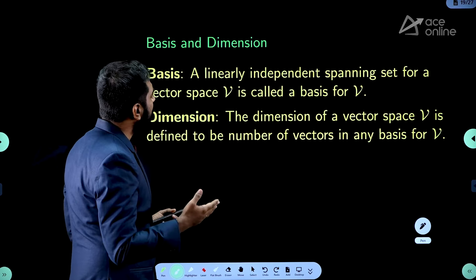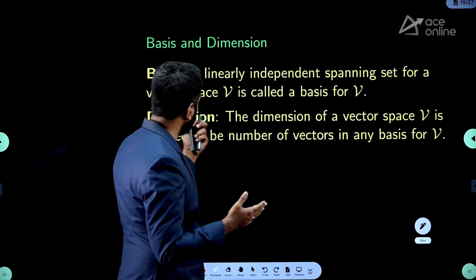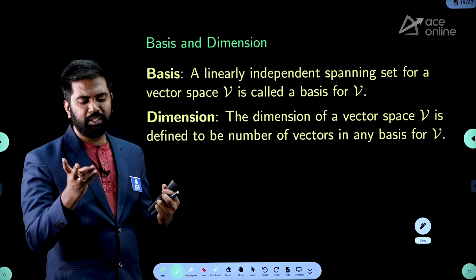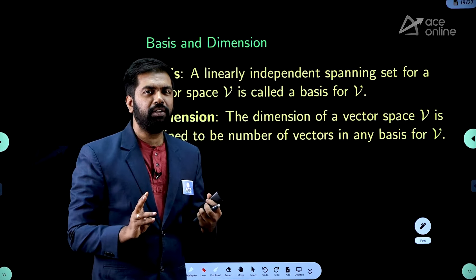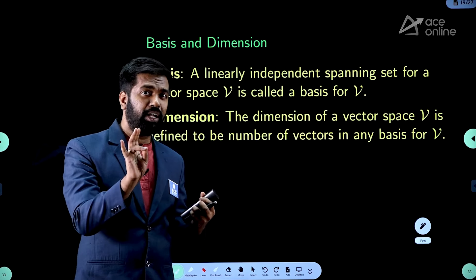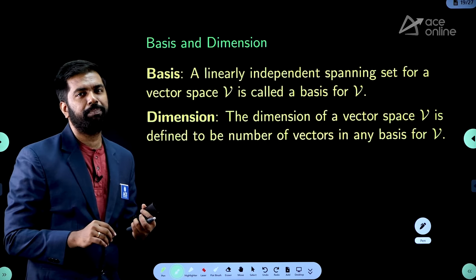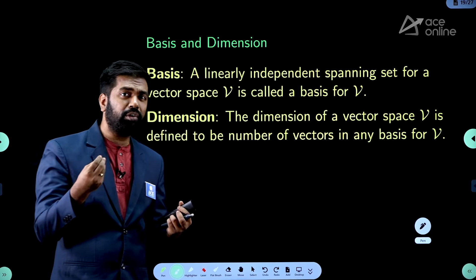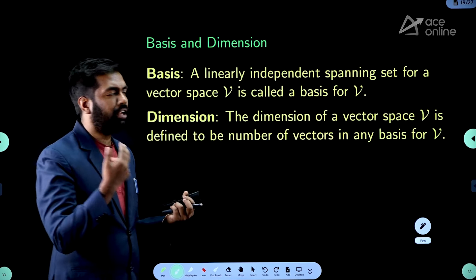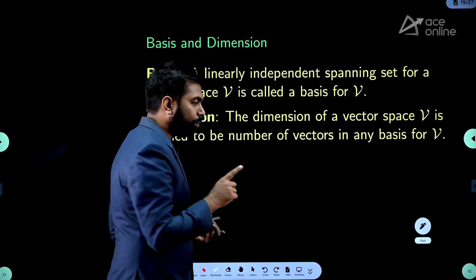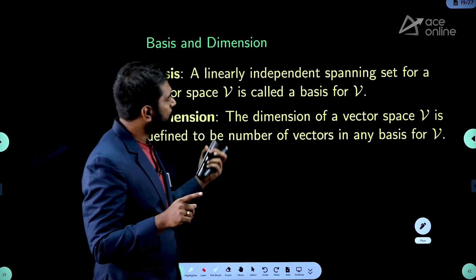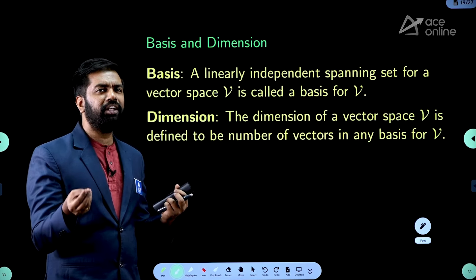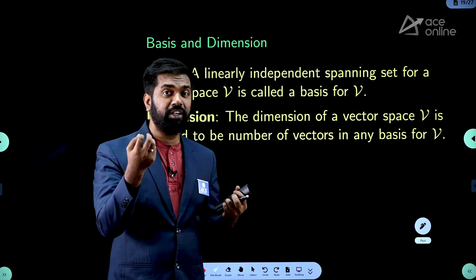What is a basis? A linearly independent spanning set for a vector space V is called a basis for V. There are two important terms here: linearly independent vectors, and those vectors should span the given vector space. What is the meaning of spanning the given set? A linearly independent spanning set for the vector space V is called basis. When I take examples, you will definitely understand.